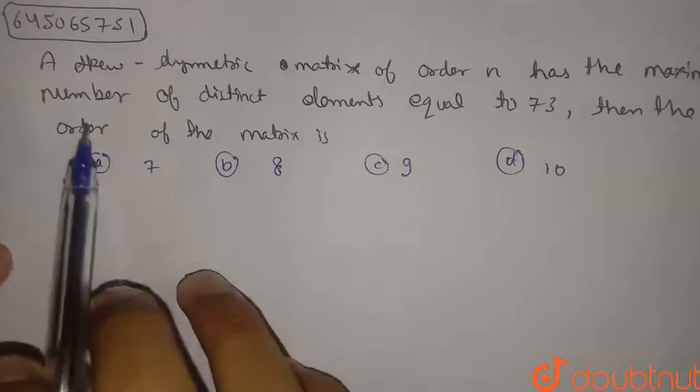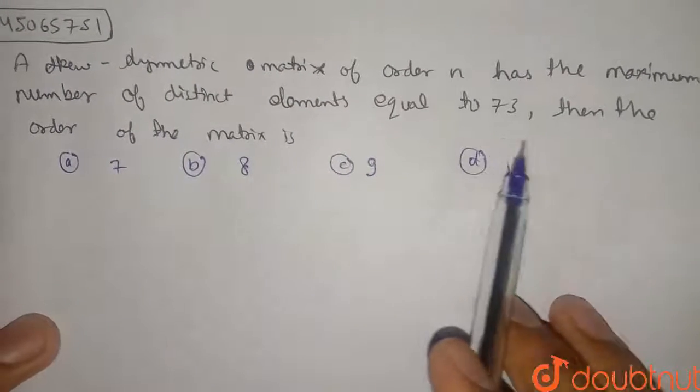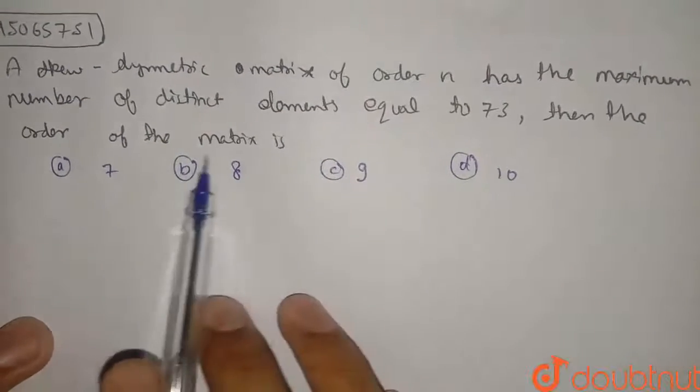In this question it is given a skew-symmetric matrix of order n has a maximum number of distinct elements equal to 73 and we have to find order of the matrix.